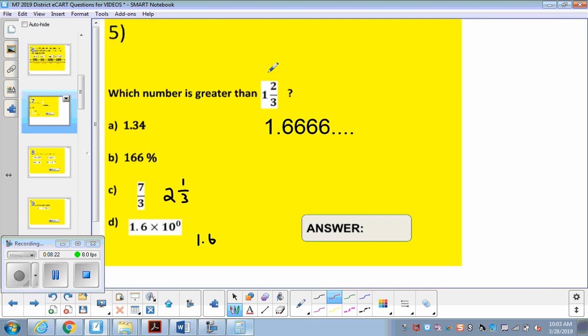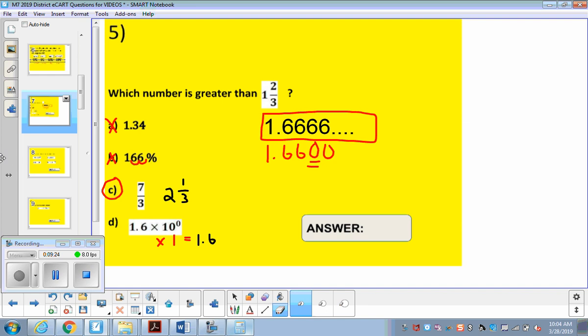And for question 5, we want to know which number is bigger than 1 and 2 thirds. So what I did was I took the 1 and 2 thirds and I wrote it as a decimal. We can easily see 1.3 something is not going to be bigger than 1.6 something. This percent, if I move it over and make it a decimal, I'm going to get 1.66. We can see that 0 is smaller than this 6, so we're not going to pick B. Now if we're looking for something that's bigger than 1 and 2 thirds, there it is. 7 thirds, 3 goes into 7 twice and we get 1 out of the 3 left over. The last one, 1.60 would be smaller than 1.66. The reason I know this is 1.6 is because anything to the zero power is 1, and anything times 1 is itself.